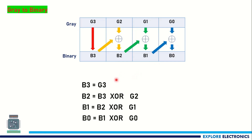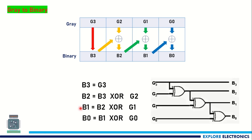These four are the bitwise expressions for the binary number. For the logical circuit: G3 is the same as B3; using B3 and G2 XORed, we get B2; using B2 and G1 XORed, we get B1; B1 XOR G0 gives B0. This is the simple process to convert binary to gray and gray to binary.